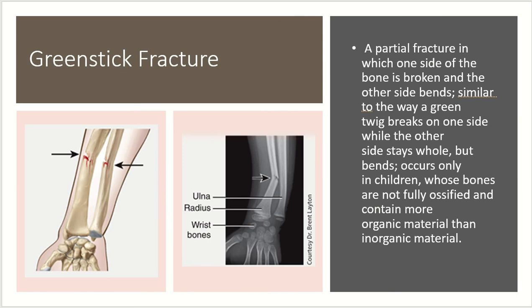Next we have the greenstick fracture. This is a partial fracture in which one side of the bone is broken and the other side bends — kind of like when you have a young, sappy twig and bend it: one side breaks but it doesn't break all the way through. This type of fracture occurs only in children, because those bones have not yet fully ossified and contain more organic than inorganic material compared to adult bones.